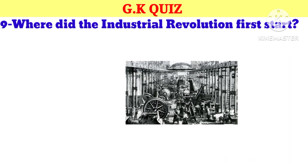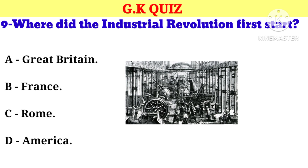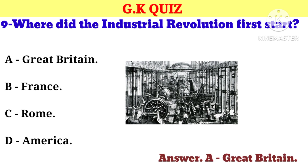Question number 9. Where did the industrial revolution first start? Your options: A. Great Britain, B. France, C. Rome, D. America. And your correct answer is A. Great Britain.